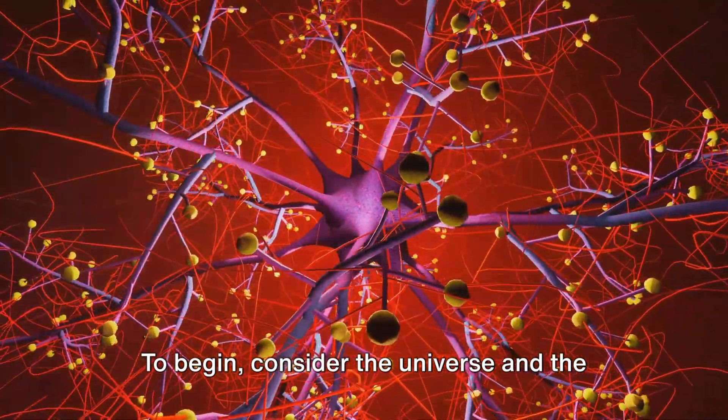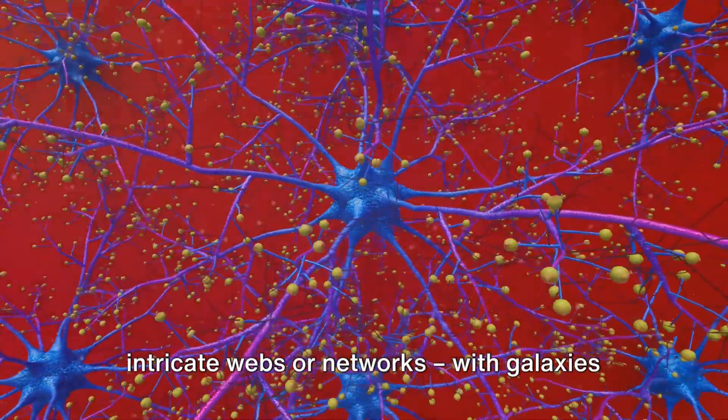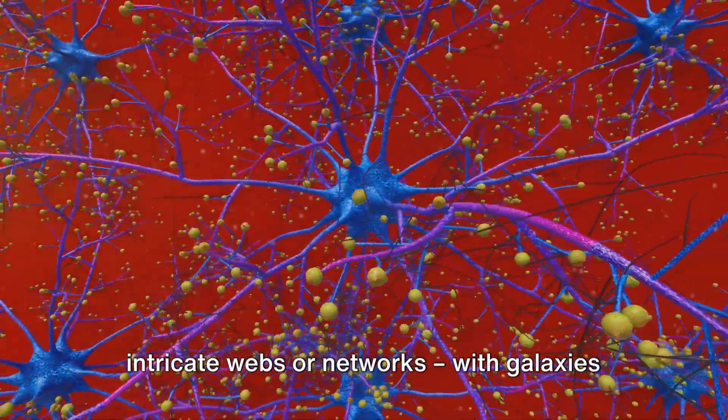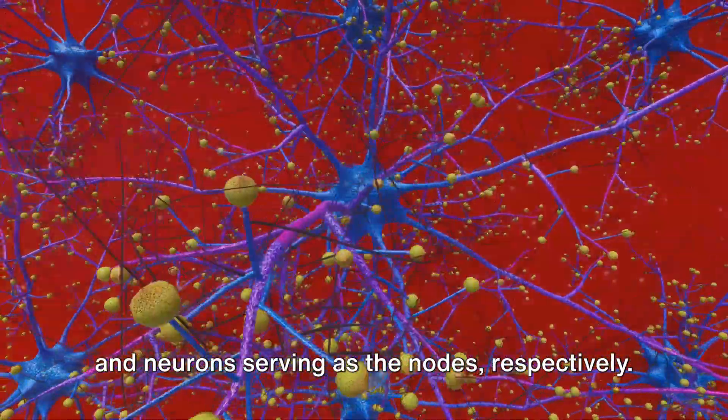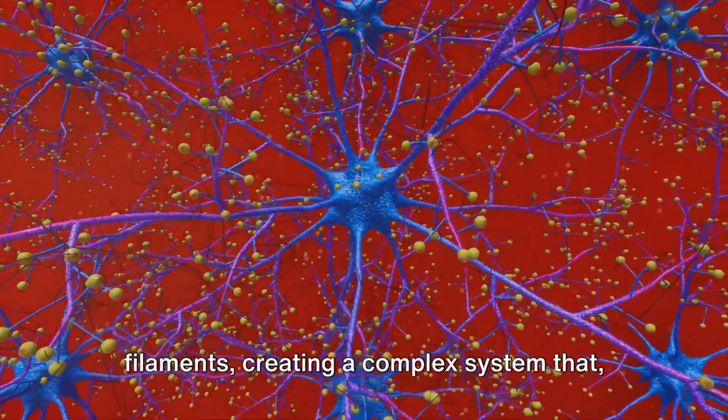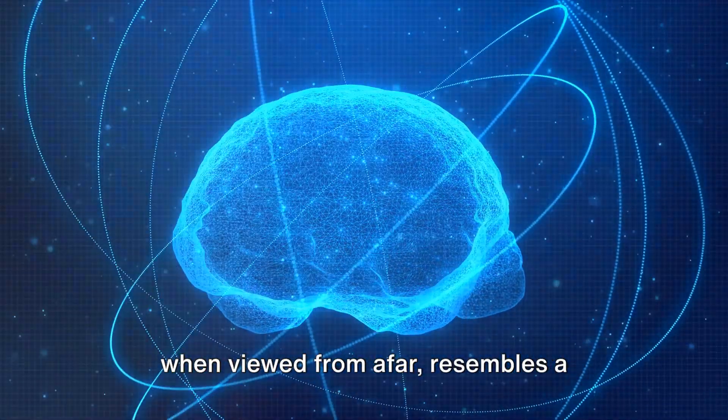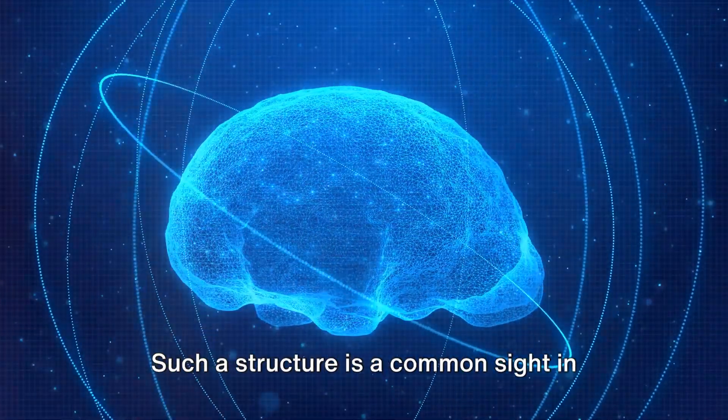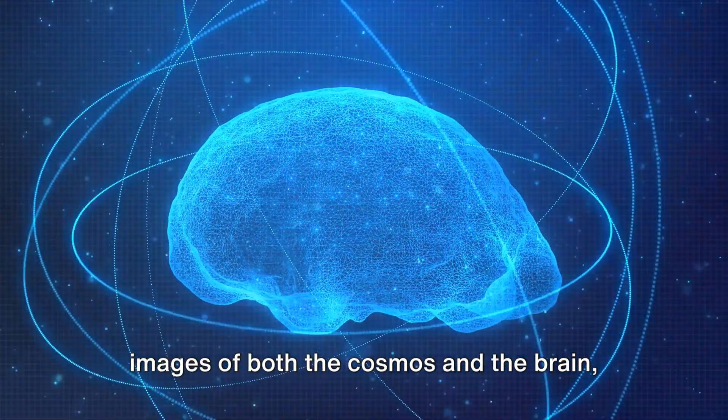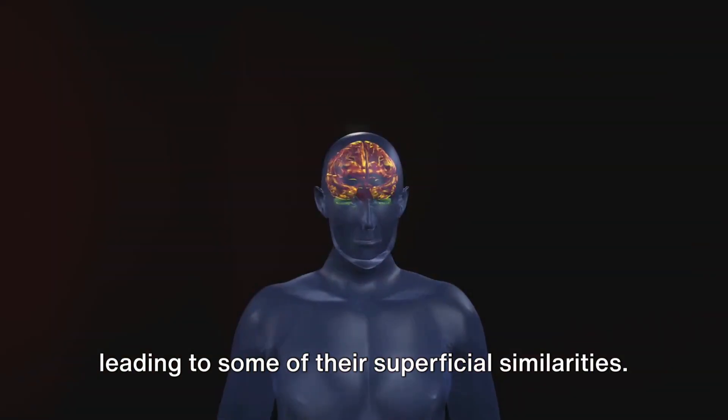To begin, consider the universe and the human brain not as monoliths, but as intricate webs or networks, with galaxies and neurons serving as the nodes, respectively. These nodes are spread out in long filaments, creating a complex system that, when viewed from afar, resembles a sprawling, interconnected web. Such a structure is a common sight in images of both the cosmos and the brain, leading to some of their superficial similarities.